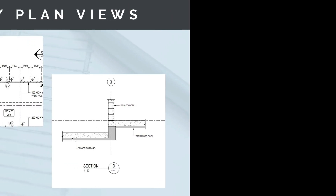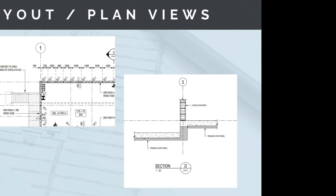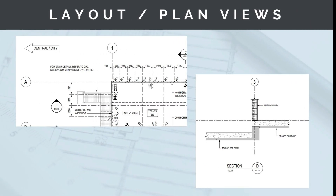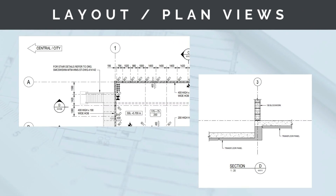The next drawing type is the layout or plan view. The layout or plan view is an aerial view of the project. Typically you also have north-south or east-west grid lines, which show how the project is broken up. The layout or plan view is a really good way to understand where everything is spatially.